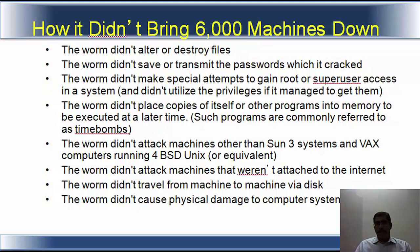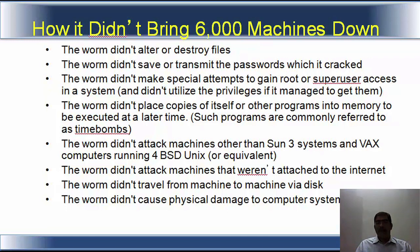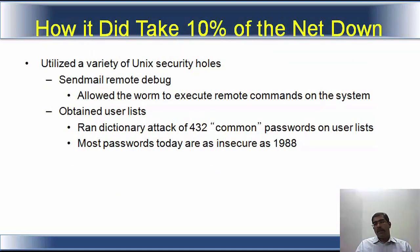This particular worm did not alter or destroy files, did not save or transmit the passwords it cracked, and did not make special attempts to gain root or superuser access. It did not place copies of itself or other programs into memory to be executed at a later time — it did not function as a time bomb. It did not attack machines other than Sun 3 systems and VAX computers running 4BSD Unix. It was focused on a small range of operating systems and did not travel from machine to machine via disk. It did not cause physical damage to computer systems. But it took down 10 percent of the internet by utilizing a variety of Unix security weaknesses at that time.